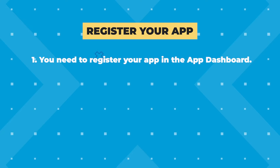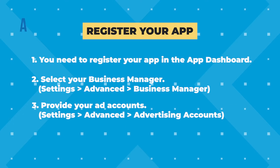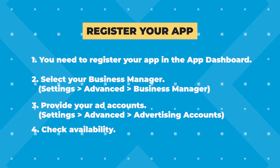The first step of registering your app is going to the app dashboard and making sure that you've followed the steps there. Be sure to set the platform for your mobile app, like iOS or Android. You'll select your business manager by going to business settings, advanced business manager. You also need to provide your ad accounts by going to settings, advanced advertising accounts, and check availability. Make sure that your app is publicly available in the correct platform. Then in the dashboard, when you click on app review, they'll ask you to make your app public and you'll say yes. This will lead you right into an ad setup.